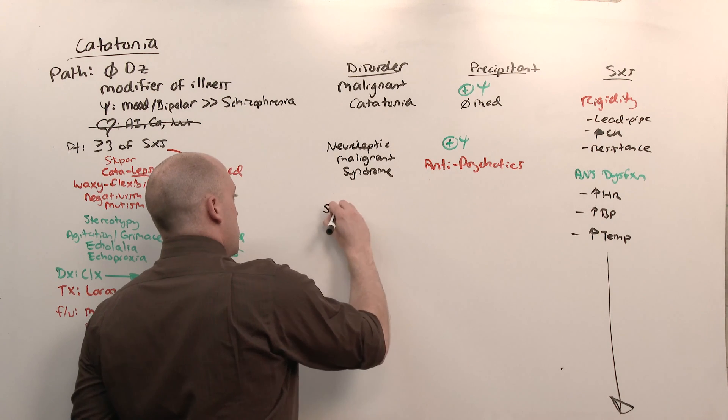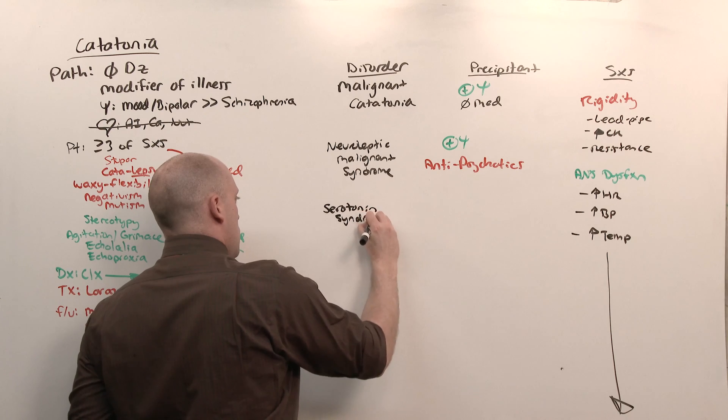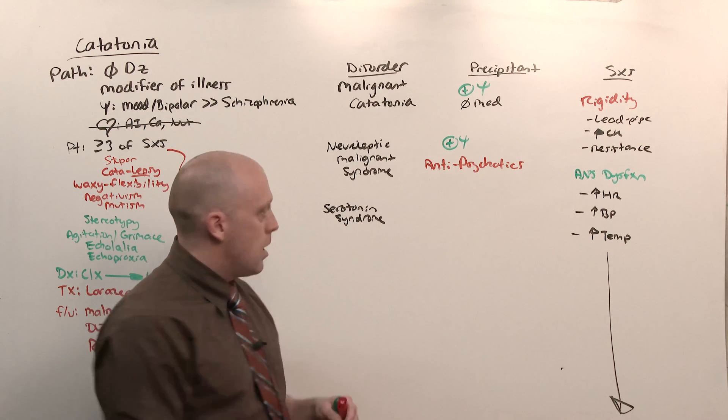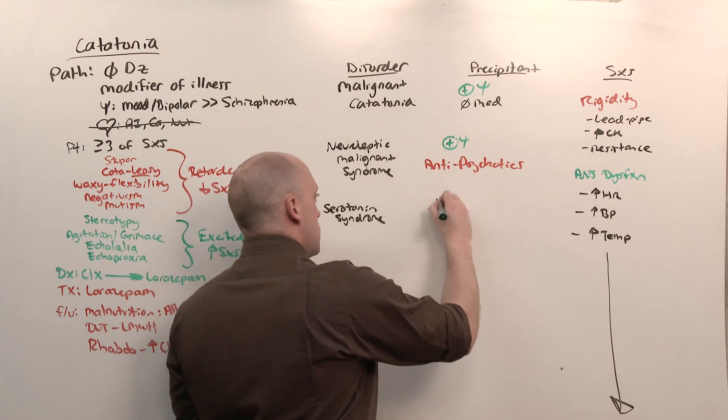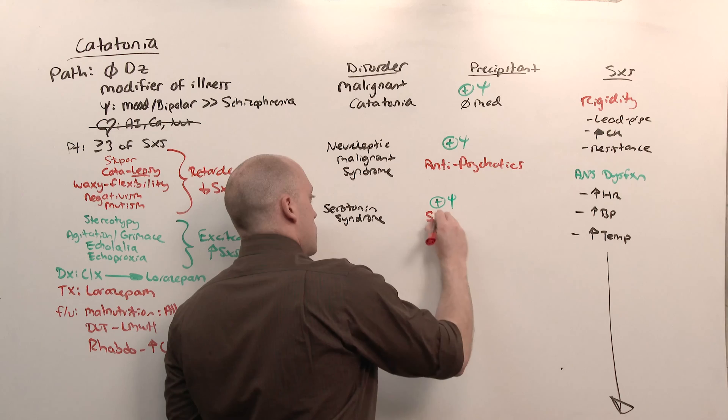Serotonin syndrome, this one should be pretty easy. Lead pipe rigidity, elevated CK, heart rate, blood pressure, temperature. There's going to be a psychiatric disease, and it's usually going to be mood, anxiety, and they're being treated with SSRIs.